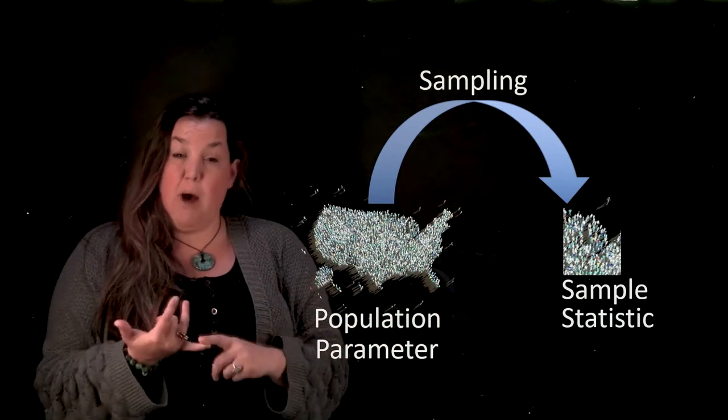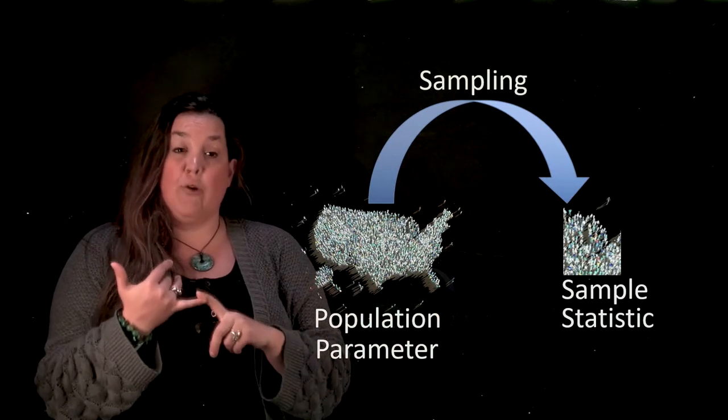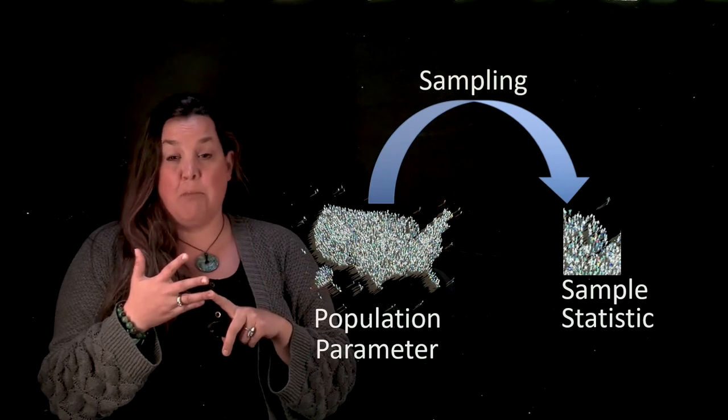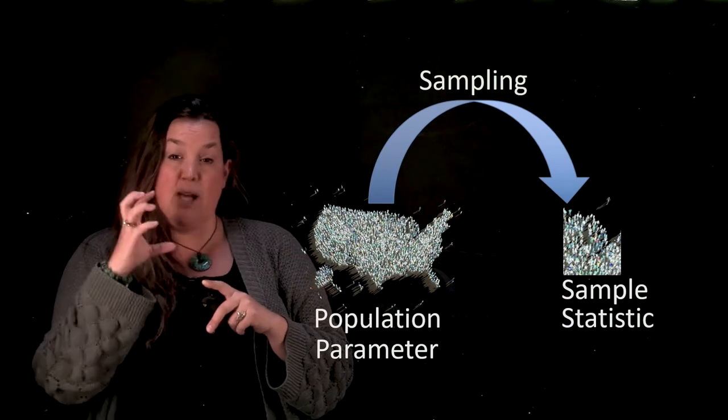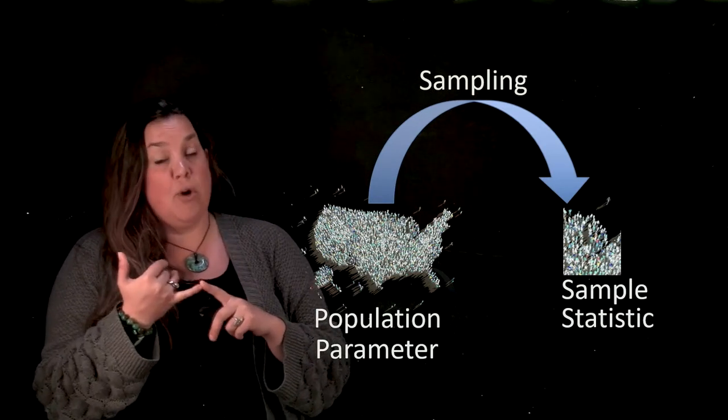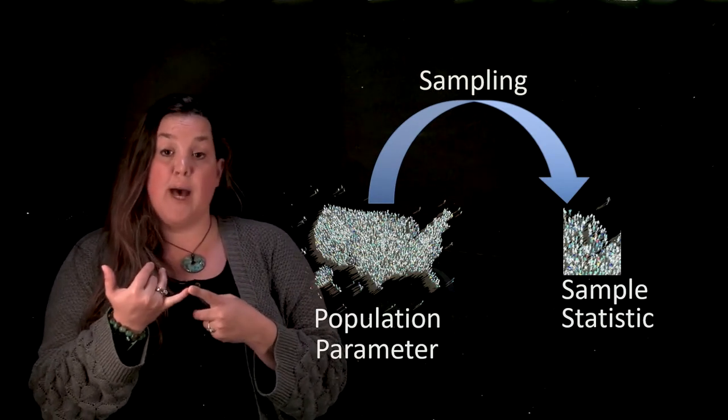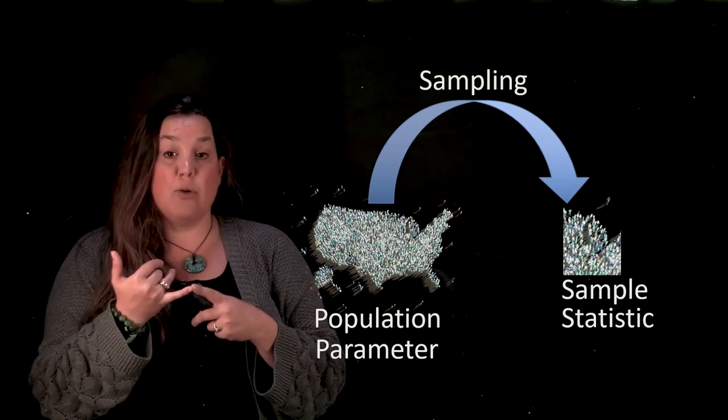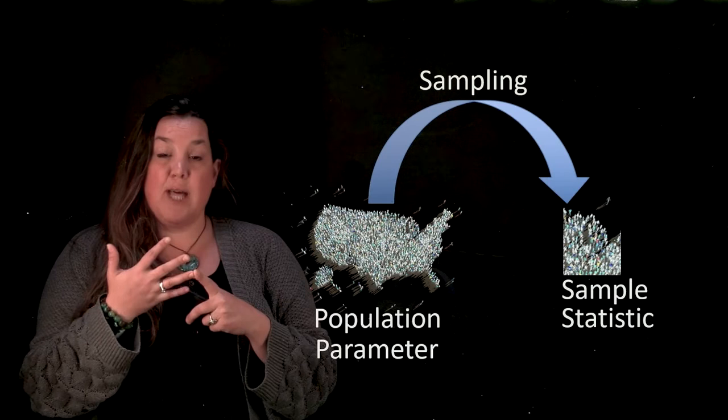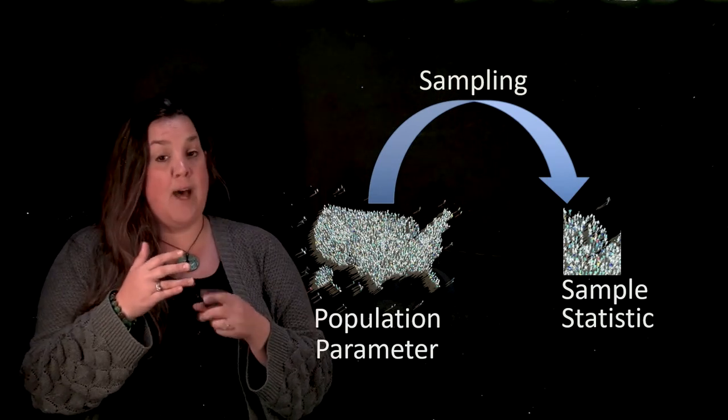So here we've talked about populations, that's that all, whole, or entire. We can take a sample using some sampling method and a sample is going to be that subset or that smaller group. When you have a number that's referring to a population, we refer to that as a parameter. Remember the P's go together and then we have a sample and a number referring to that as a statistic and remember then the S's go together.